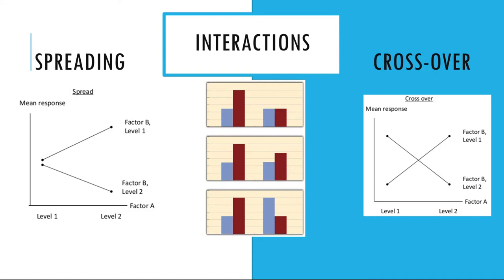In the middle panel, independent variable B has a stronger effect at level 1 of independent variable A than at level 2. There's a larger difference in height between the blue and red bars on the left side than on the right side of the graph. This is like the hypothetical driving example, where there was a strong effect of using a cell phone at night and a weaker effect during the day. To summarize, for spreading interactions, there's an effect of one independent variable at one level of the other, but a weak or no effect at the other level.